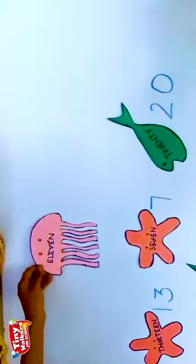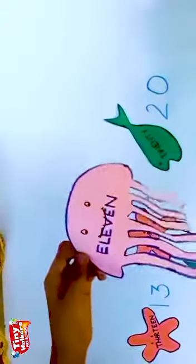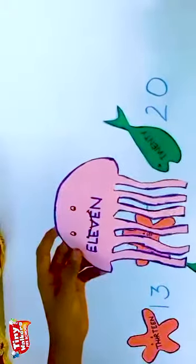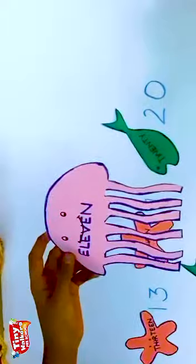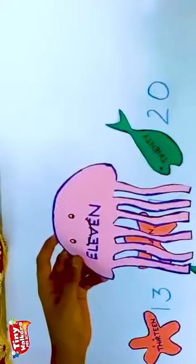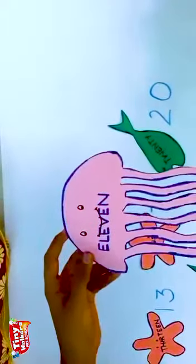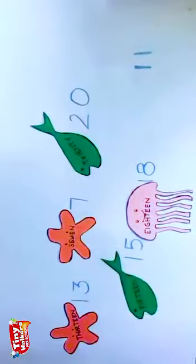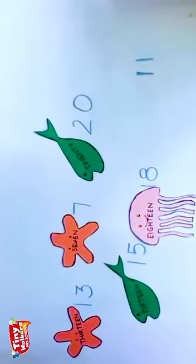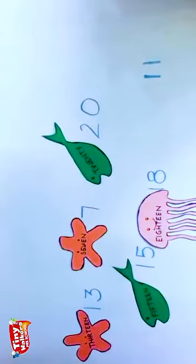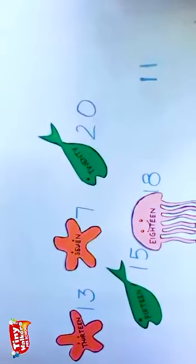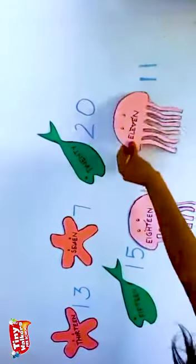What is written on it? E-L-E-V-E-N. Eleven. Eleven is written here? Yes. One, one, eleven. We will place the jellyfish here.